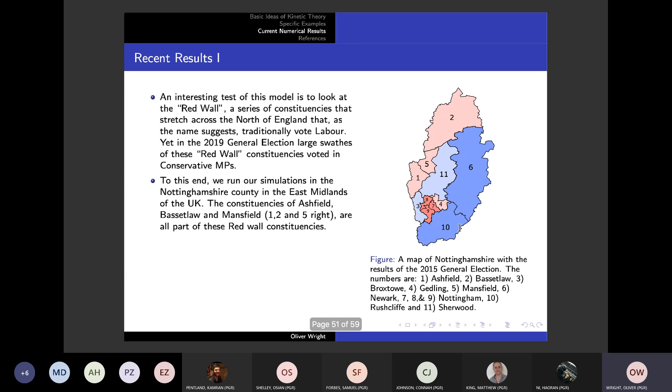So we have run our simulations in Nottinghamshire in the East Midlands. The reason we chose this one is because it had some that didn't change over the election. And the constituencies of Ashfield, Mansfield and Bassetlaw were all a part of this red wall that all swapped to voting conservatives.